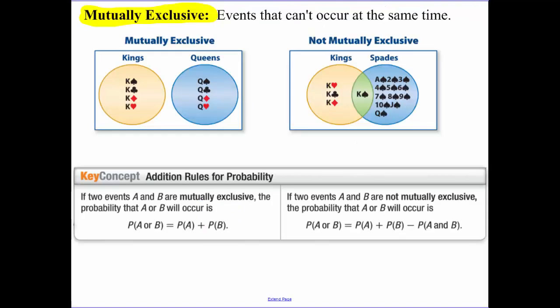A little bit more challenging with some probabilities. Mutually exclusive. Events that can't occur at the same time. So if you think of a deck of cards, kings and queens are mutually exclusive. You can't have a king and a queen on one card unless it's a fake deck. Versus kings and spades, there is a king that's a spade. So that is not mutually exclusive.